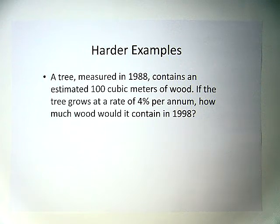Now we're going to look at some harder examples and some things that might not involve money. A tree measured in 1988 contains an estimated 100 cubic meters of wood. If the tree grows at a rate of 4% per annum,